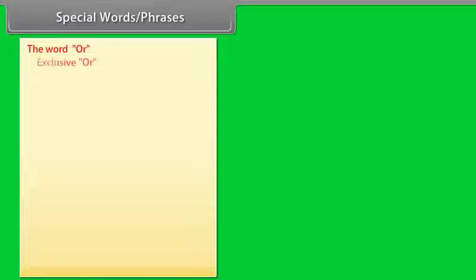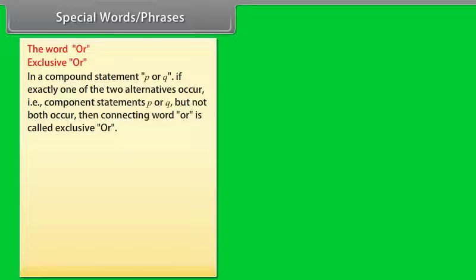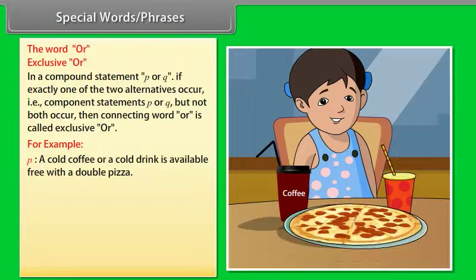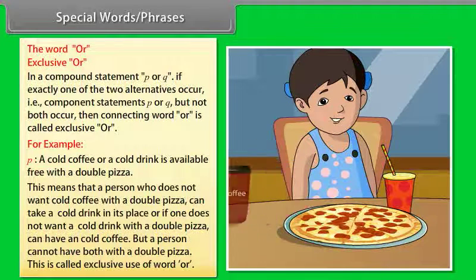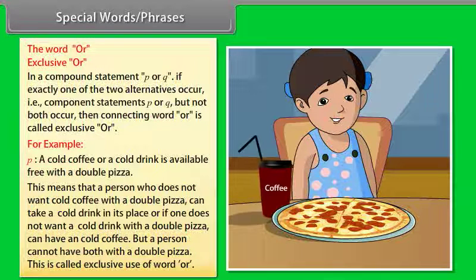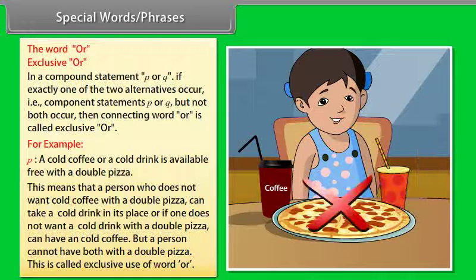The word OR. Exclusive OR: In a compound statement P or Q, if exactly one of the two alternatives occurs — that is, component statement P or Q but not both — then the connecting word OR is called exclusive OR. For example: 'A cold coffee or a cold drink is available free with a double pizza.' This means a person can choose one but cannot have both with a double pizza. This is called the exclusive use of the word OR.